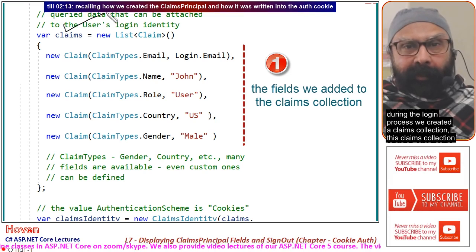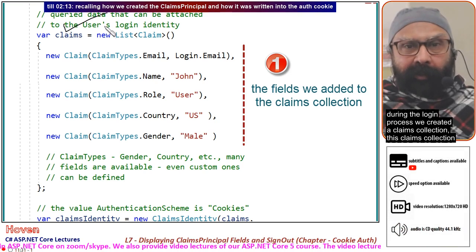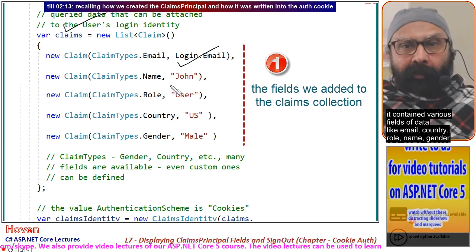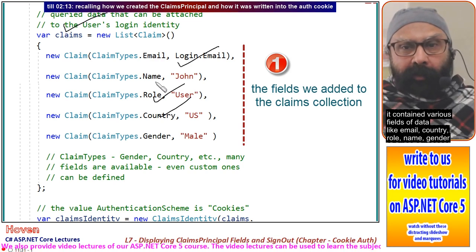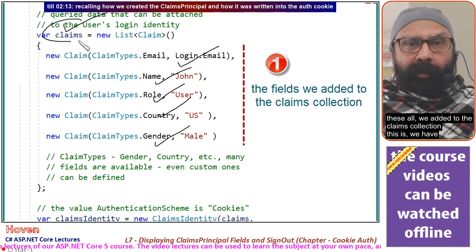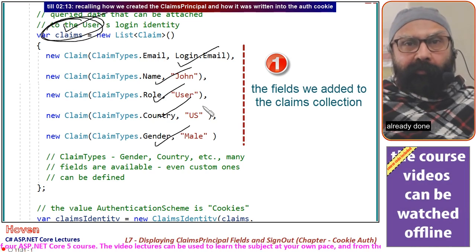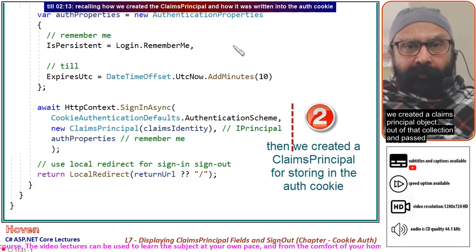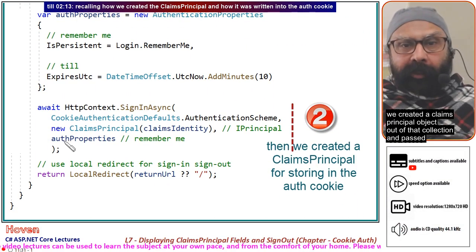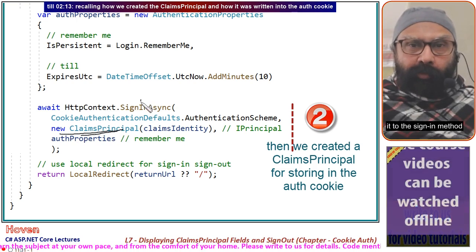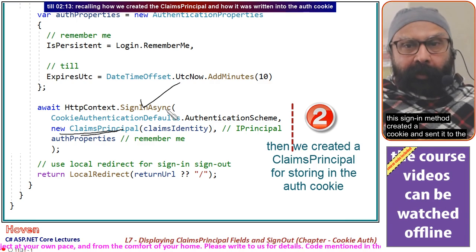During the login process, we created a claims collection. This claims collection contained various fields of data like email, country, role, name, and gender — all added to the claims collection. After that, we created a claims principal object out of that collection.